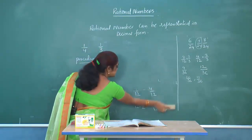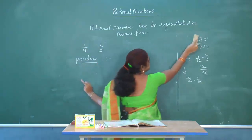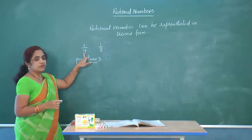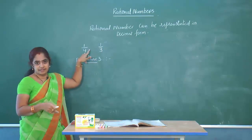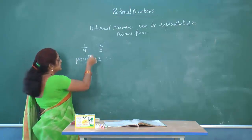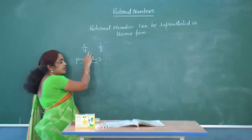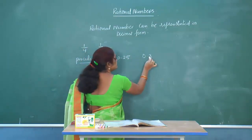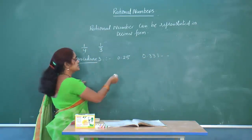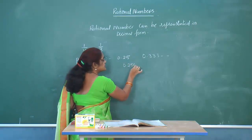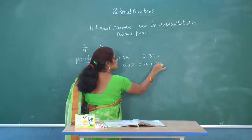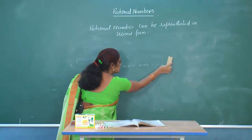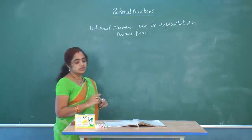Procedure 3: convert the given rational numbers to decimal form, then write as many decimal numbers as you want in between. For example, 1/4 = 0.25 and 1/3 = 0.333...; rational numbers between them include 0.26, 0.256, 0.2566, and so on.